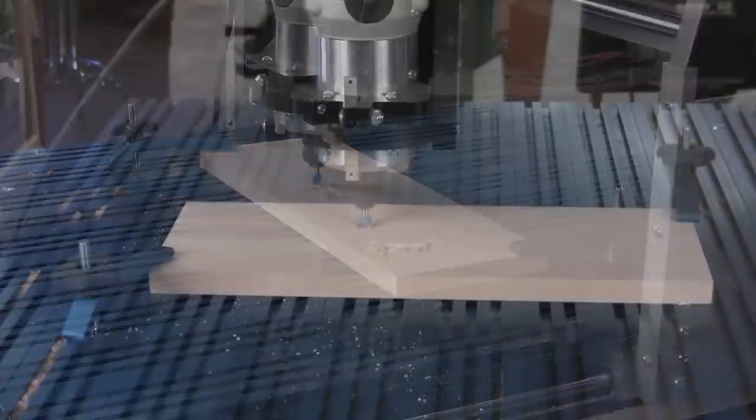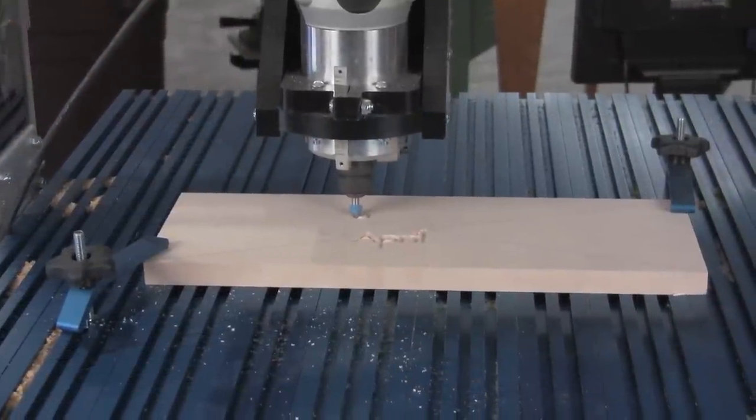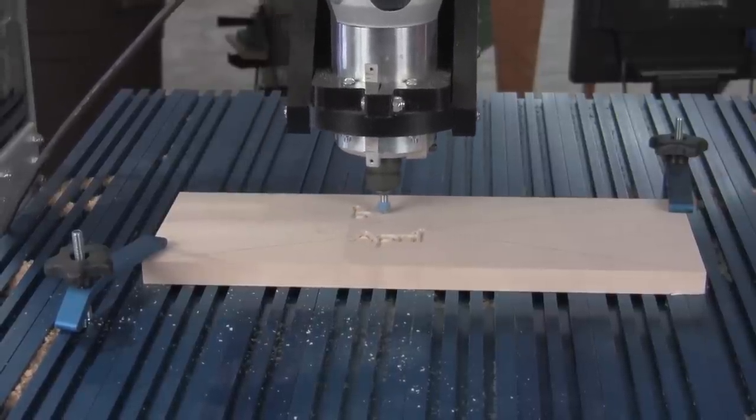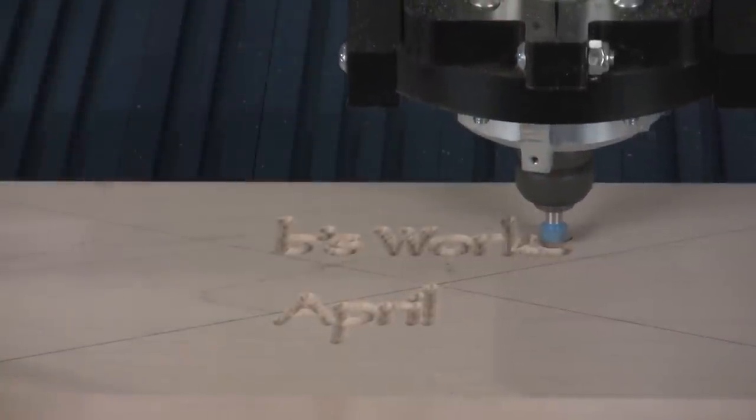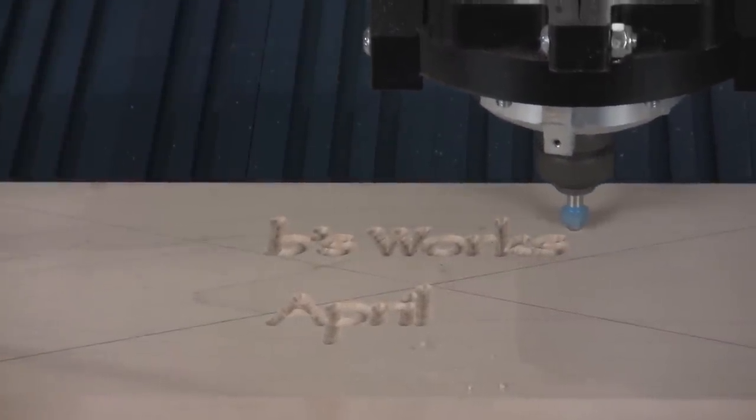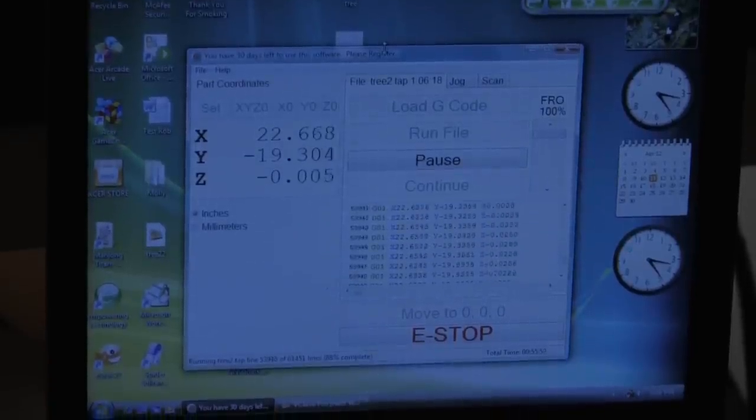Once the machine has set up and it started cutting, there's really nothing for you to do but kind of watch it. The great thing about this is all that setup is repeatable. So, I'll have to do this to load the file the next time and I can make another sign as many times as I want. Just watch it through the first time to make sure everything's fine.